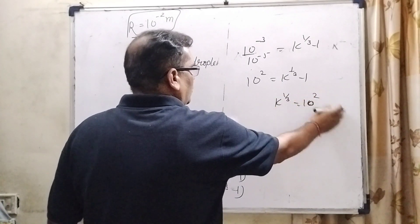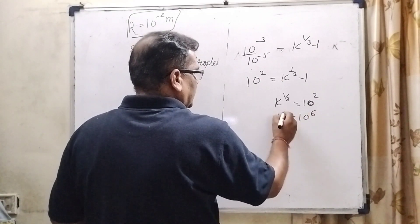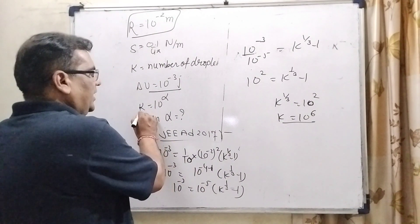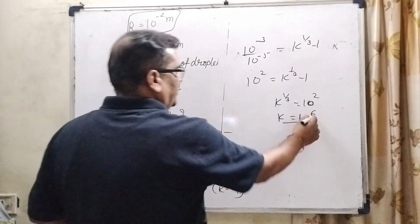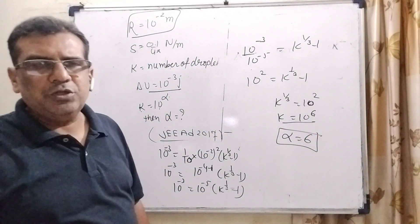Here, in the question, we have given that k equal to 10 raised to power alpha. It means alpha equal to 6. I hope so, you understood this question.